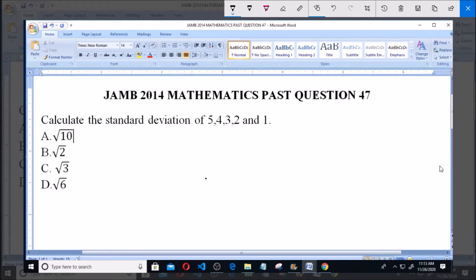Calculate the standard deviation of 5, 4, 3, 2, and 1. Now standard deviation SD is given as the square root of summation of x minus the mean, raised to the power of 2, all over n.